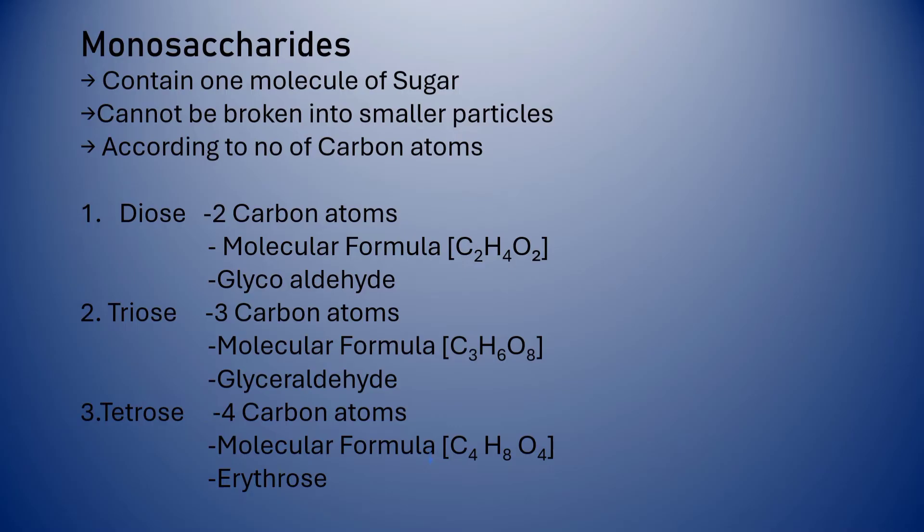Tetrose contains four carbon atoms with molecular formula C4H8O4, example is erythrose. As we can see here, diose consists of two carbon atoms in its molecular formula, triose has three, and tetrose has four.